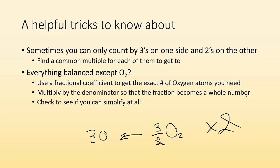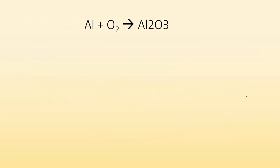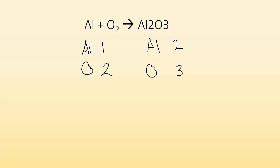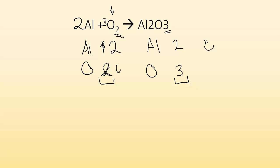I have an example — let's take a look. I've got Al plus O2 gives me Al2O3. Create my inventory: Al and O on the reactant side — one aluminum and two oxygens. Products: two aluminum and three oxygens. Now I balance aluminum by putting a two in front of Al, so the aluminums are happy for now. Now oxygen: I can only count by two on one side and three on the other. I know I can get both to six — put a three in front of O2, so now I have six oxygens. Put a two in front of Al2O3 and update my inventory — now I have six oxygens on both sides.